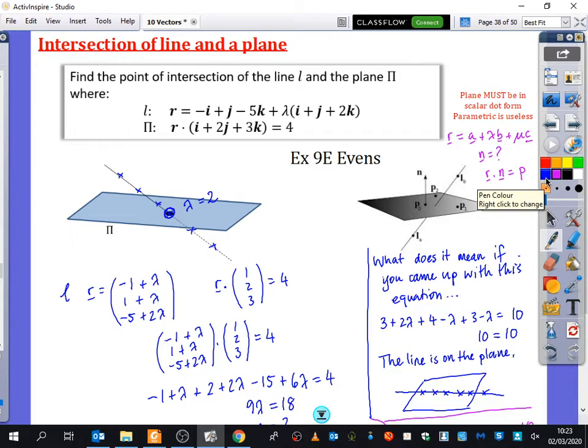So if you do have a parametric form of a plane, reminder that a parametric form is like this. If you have this form, you first of all have to find out what n is equal to. You have to find a normal and then you have to find out what the r dot n form is equal to, to be able to do this technique of substituting the line into the plane. So always aim for these kinds of things. The scalar form, the dot product form is far better.